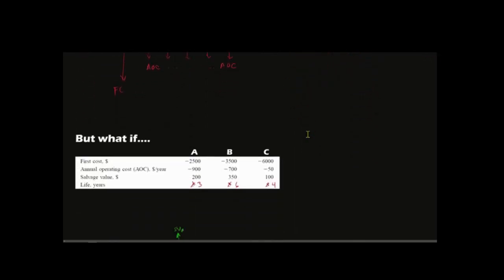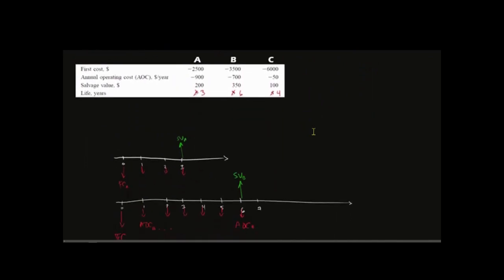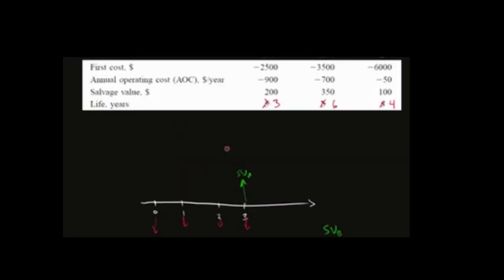So let's do a what if. Let's look at that same example, except this time we're going to say, what happens if, for instance, the lifespan for equipment A or option A is three years, not five. So all the same values, except option B is six years. And then option C has a life of four years.